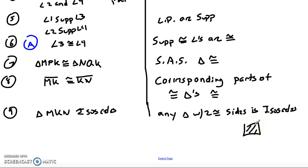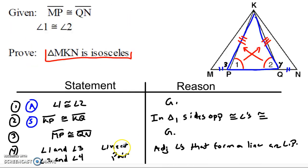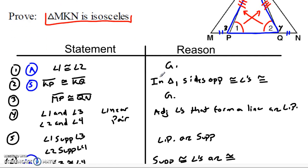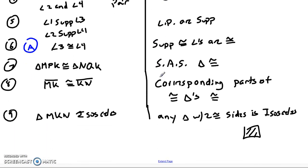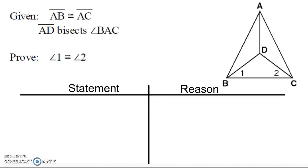And there's our proof — we can go ahead and put a proof box there. A simple proof using the fact that in a triangle, sides opposite congruent angles are congruent. Let's take a look at another proof involving this theorem, featuring it a little more prominently this time.